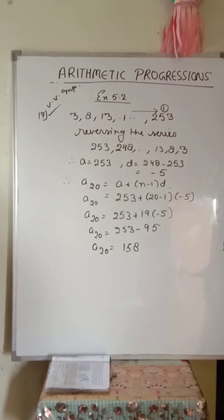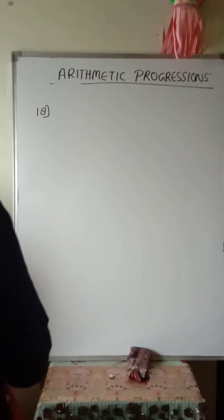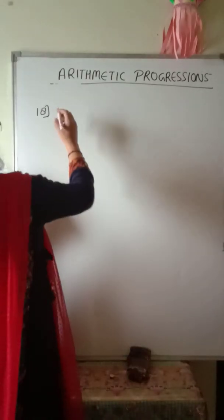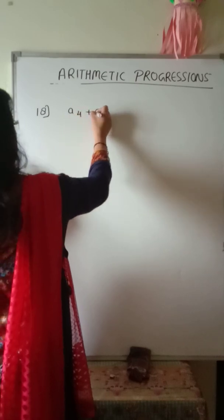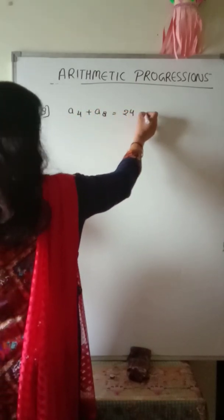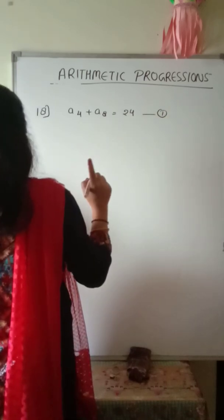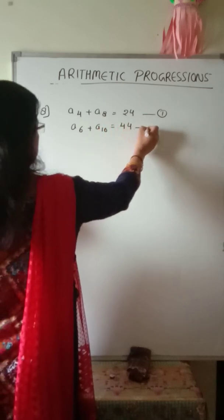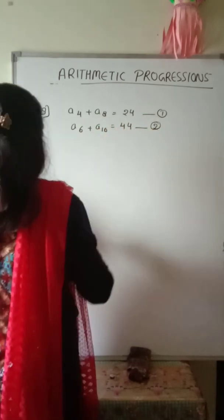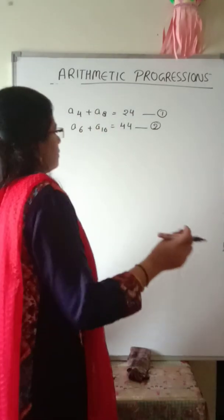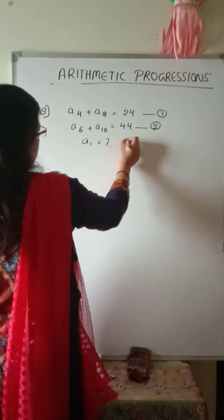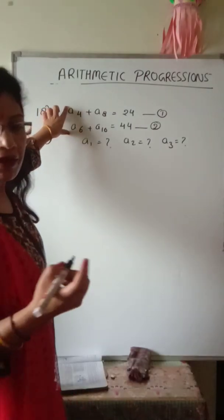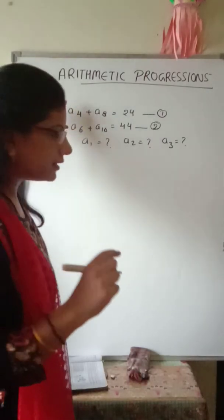Question number 18: The sum of the 4th and 8th terms of an AP is 24 — this is equation 1. The sum of the 6th and 10th terms is 44 — this is equation 2. We have to find the first three terms of the AP using these two equations.